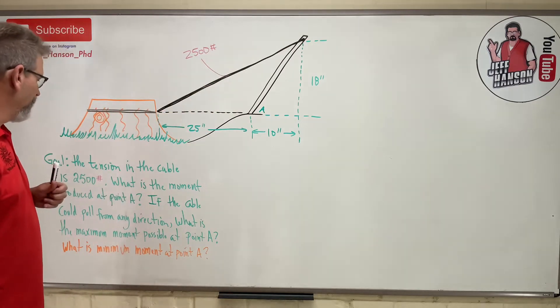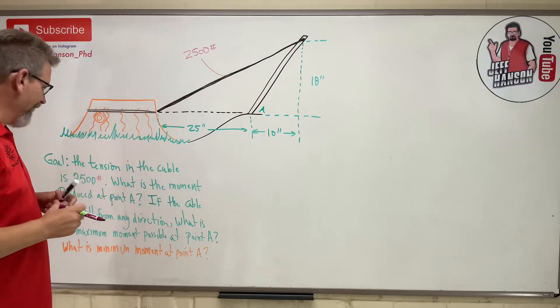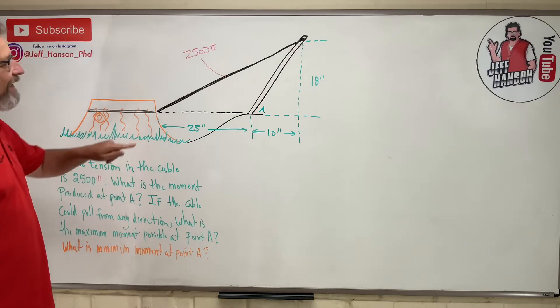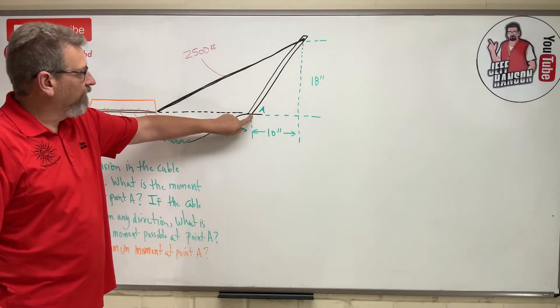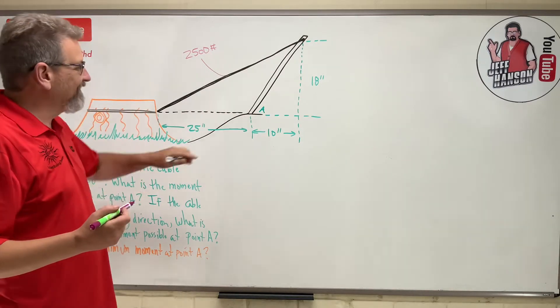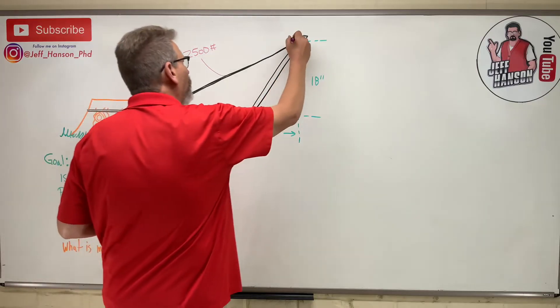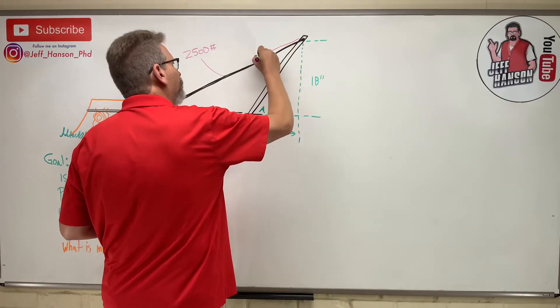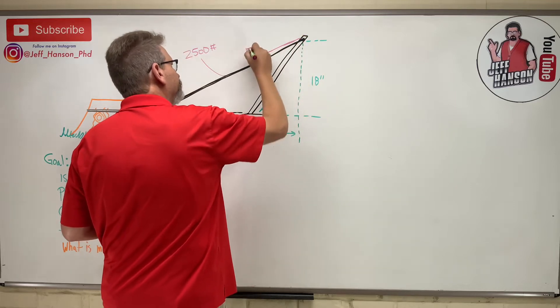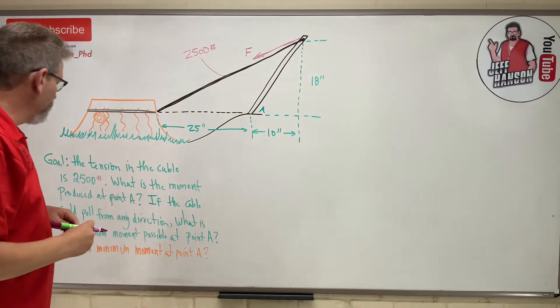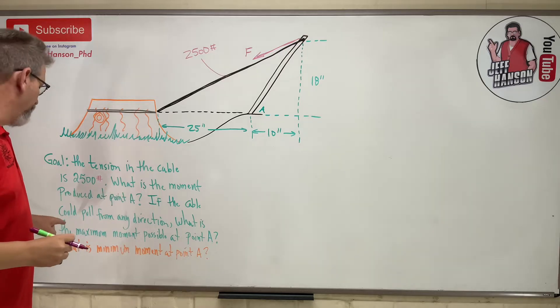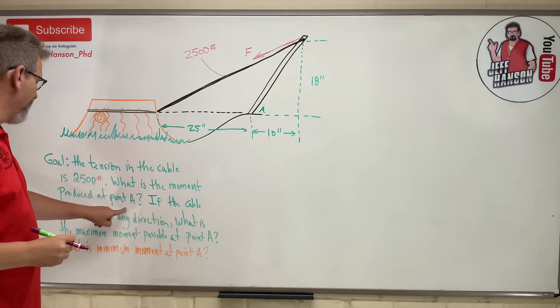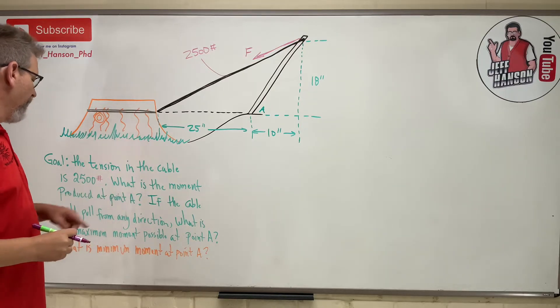Okay, the tension in the room was high. What is the moment produced at point A? So what is the moment here produced by that cable? Now what does this pole here feel? The pole feels this, right? It feels some force pulling like that. If the cable could pull from any direction, oh that's some other stuff. We'll do that in a second. Let's do part A here.